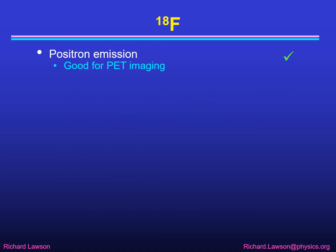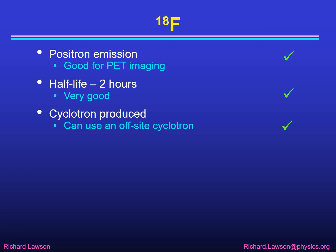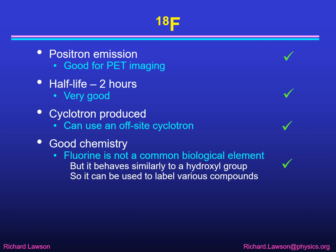Fluorine-18 is another radionuclide that decays by positron emission, so it is also good for PET — positron emission tomography. It's got a half-life of two hours which is very good because it means we can get away with an off-site cyclotron; as long as you've got a cyclotron within a couple of hours' travelling time you can have fluorine-18 delivered to your hospital without having to have your own cyclotron. It has fairly good chemistry — fluorine is not a common biological element but it behaves similarly to a hydroxyl group, so it can be used to label various compounds.